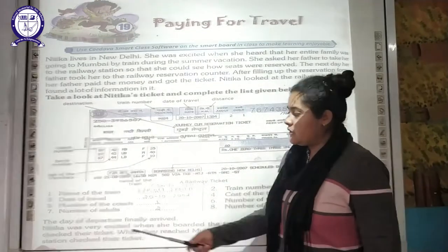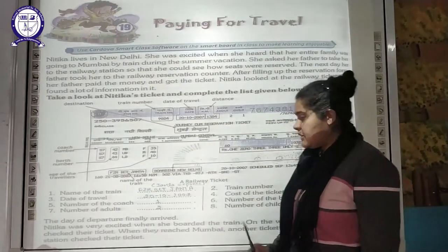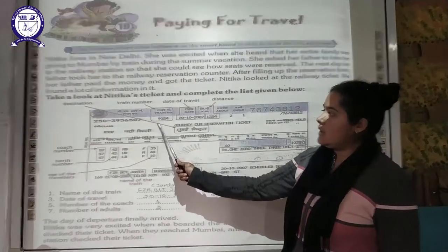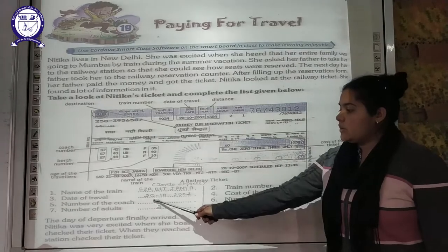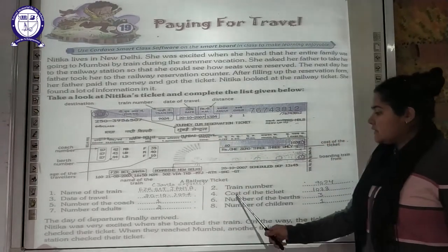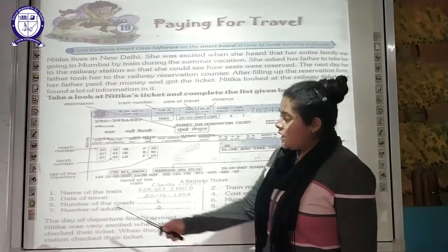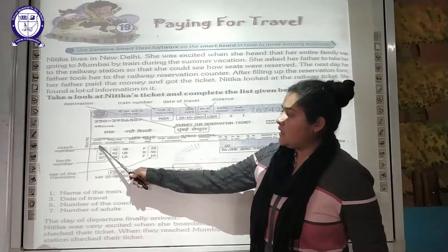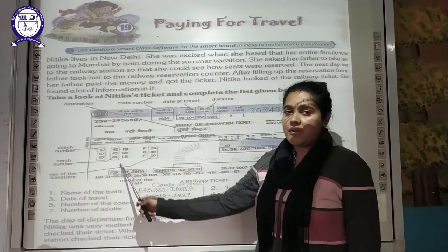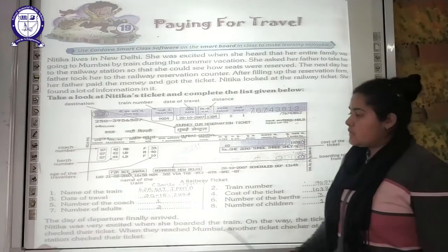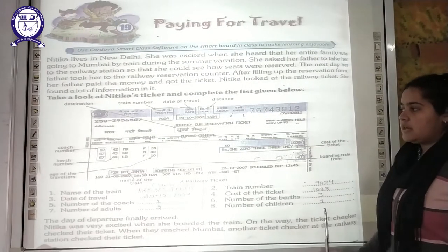Let us fill in the details. The name of the train is Janta Express, train number is 9024, the date of travel is 20/10/2007, and the cost of the ticket is 1033 rupees. The coach number is S7, there are 3 berths because 3 people are travelling — 2 adults, that is Nitika's mother and father, and 1 child, that is Nitika herself.